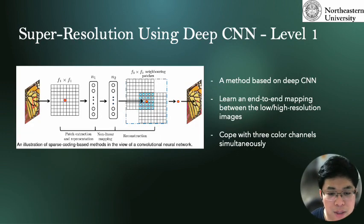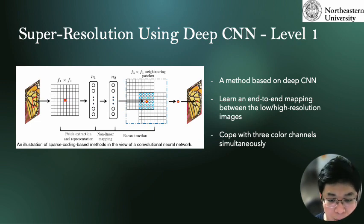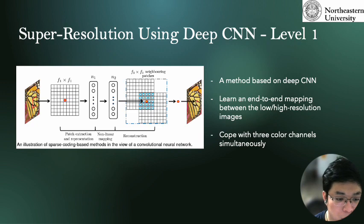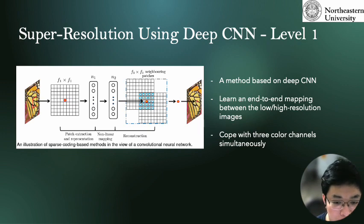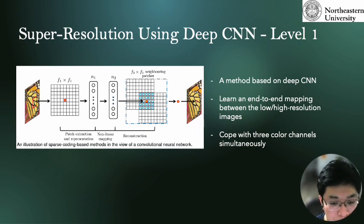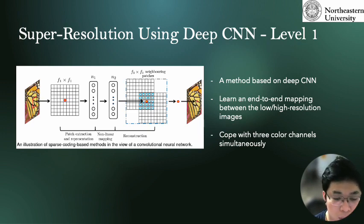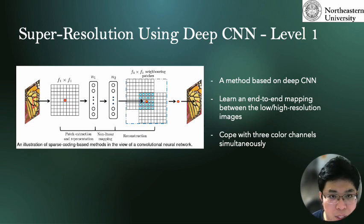The first method our team will adopt is based on deep convolutional neural networks. It is of the lowest risk level because we will use a traditional sparse coding based method. We will try to learn an end-to-end mapping between the low and high resolution images. The mapping will be non-linear, and we will train the same image from different color channels separately and simultaneously.